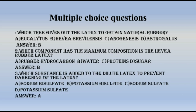MCQ 1: Which tree gives out latex to obtain natural rubber? A. Eucalyptus, B. Hevea brasiliensis, C. Anogenesis, D. Astrogelis. The answer is B — Hevea brasiliensis.